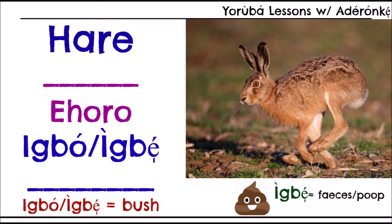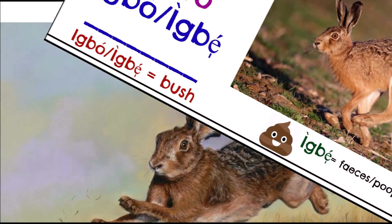Fun fact: 'igbo,' apart from meaning bush or forest, is also the Yoruba name for marijuana. And 'igbe,' apart from meaning bush or forest, can also mean feces or poop. So 'igbe' can mean feces, and 'igbo' can mean marijuana — but both primarily mean bush or forest.